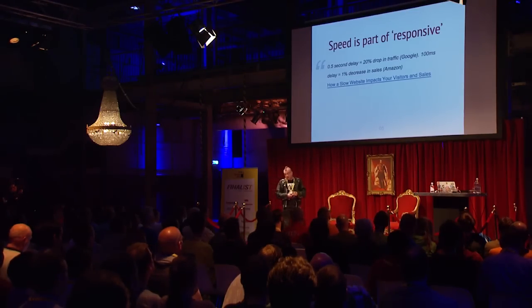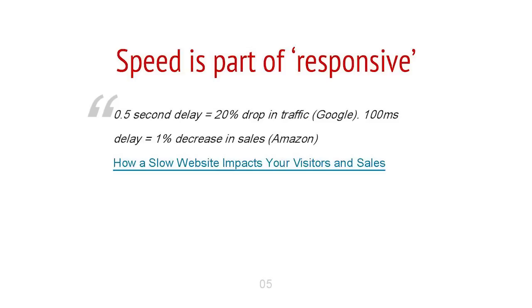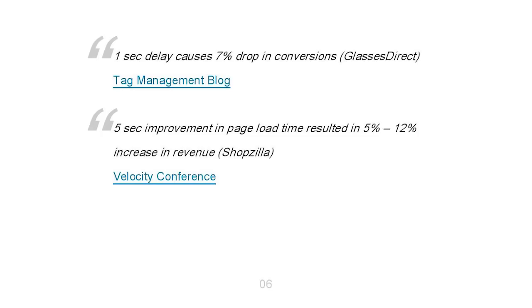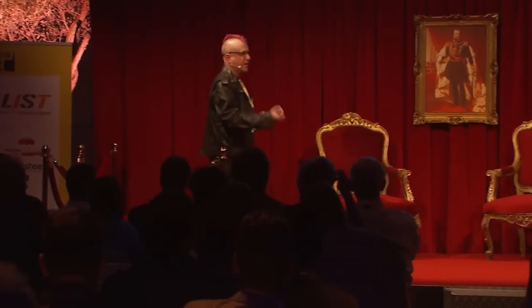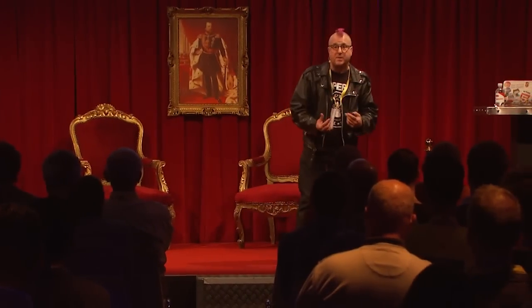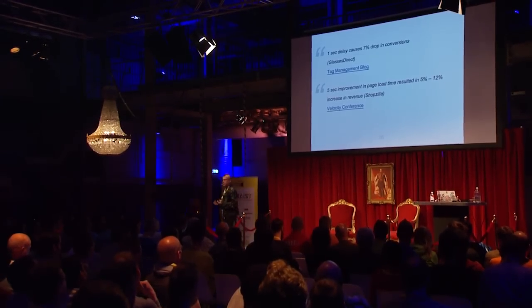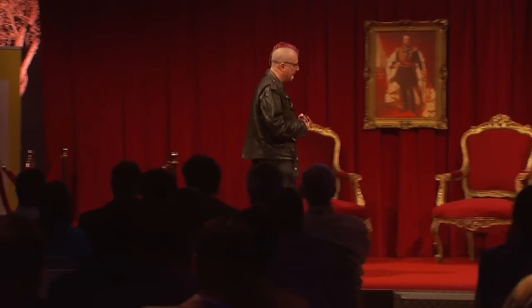A 0.5 second delay in rendering is a 20% drop in traffic, Google tells us. A 100 millisecond delay is a 1% decrease in sales, says Amazon. A 1 second delay causes a 7% drop in conversions, says Glasses Direct. A 5 second improvement in page load was a 5 to 12% increase in revenue, said Shopzilla. If you can make your websites work faster, you will get more conversions, more views, more repeat visits, and more sales.